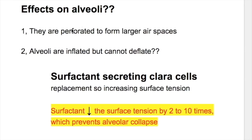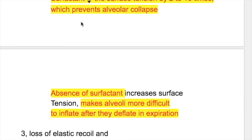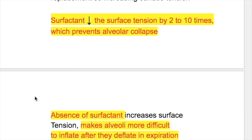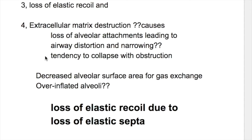What are the effects on alveoli in emphysema? Number one, they are perforated to form larger spaces. Number two, alveoli are inflated but cannot deflate. Surfactant-secreting Clara cell replacement occurs, which increases surface tension. Surfactants normally decrease surface tension by two to ten times, which prevents alveolar collapse. Absence of surfactant increases surface tension and makes the alveoli more difficult to inflate after they deflate in expiration, occurring when there is loss of Clara cells. Number three, there is loss of elastic recoil, and number four, extracellular matrix destruction. Loss of alveolar attachment leads to airway distortion and narrowing with tendency to collapse with obstruction.